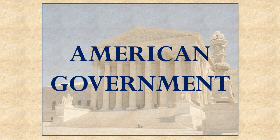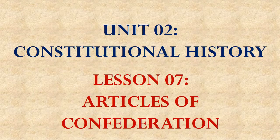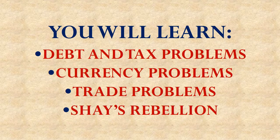Hello, this is Professor James Strickler, and this is a course in American Government. This lesson is from Unit 2 about Constitutional History, and it's Lesson 7 about the Articles of the Confederation. In this lesson, you'll learn about the debt and tax problems, currency problems, trade problems, and Shays' Rebellion that all occurred under the Articles of Confederation.